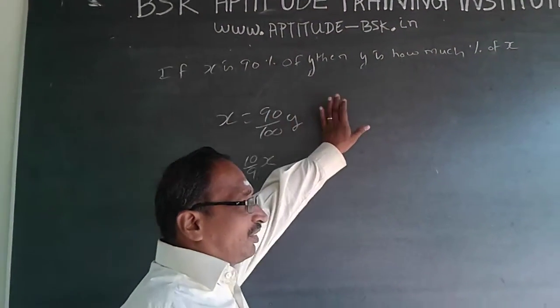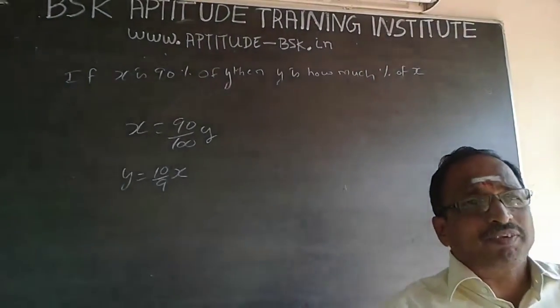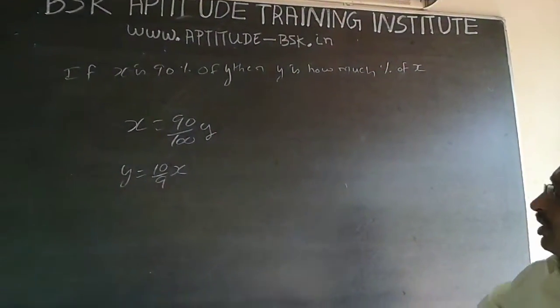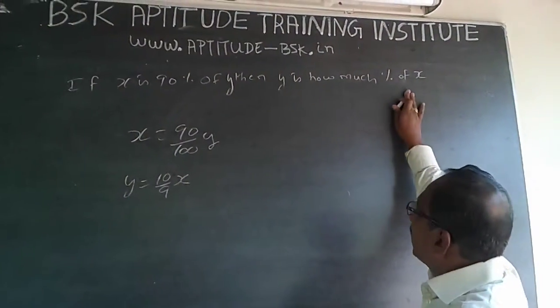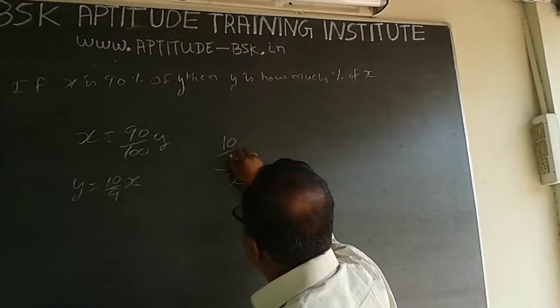Whichever number is referred as 'of', it will be denominated. So here, y is how much percentage of x? x will be denominated and y is the numerator, so it will be 10/9 of x.